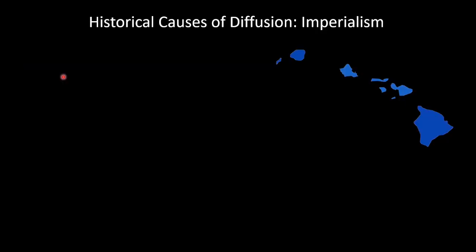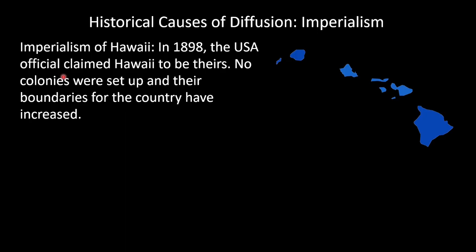Now we're going to get into another type of historical cause of diffusion, and this is imperialism. Our example is going to be America imperializing Hawaii. In 1898, the USA officially claimed Hawaii to be theirs. No colonies were set up and their boundaries increased all the way to the Pacific Ocean. Nowadays that gives them 200 nautical miles of ocean boundary, and their powers have increased to Hawaii. This is not a colony — this is officially a part of the United States. They are extending their territory and their boundaries.